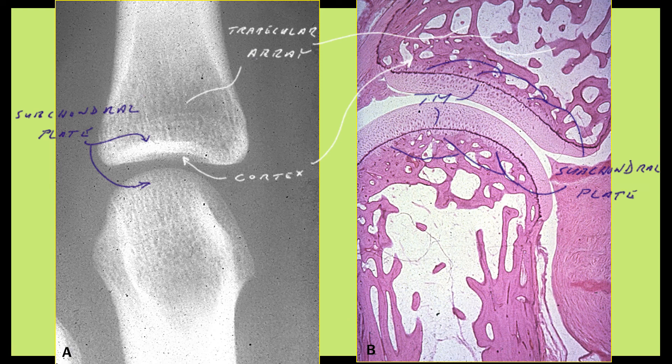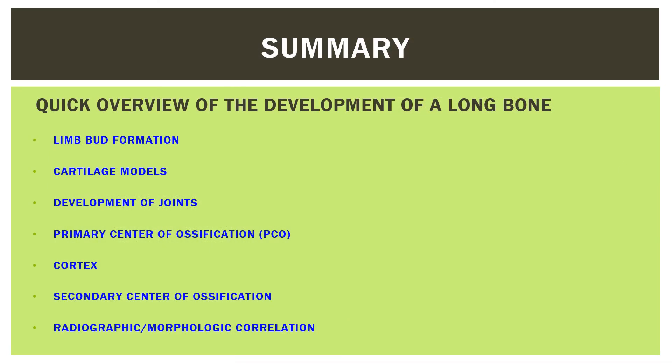The articular changes that occur in a joint from the development of osteoarthritis arise from alterations in growth from this site. In summary, we have done a quick overview of the development of a long bone: limb bud formation, cartilage models, development of joints using the elbow as an example, the primary center of ossification in detail, bone collar formation and cortical structure to one year of life. The final video, Osteogenesis 5, will cover metaphyseal bone structure, secondary center of ossification, modeling and remodeling, primary and secondary osteons, and the cortex through adulthood and aging.